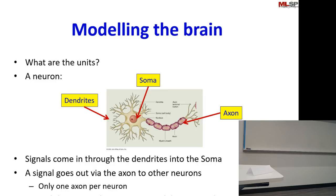People have analyzed Einstein's brain — they stored his brain. Everyone is interested in how Einstein's brain is different. It turns out he has more glial cells than normal people — much more fat in his head. So you really want to be a fat head.